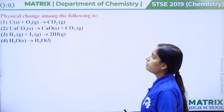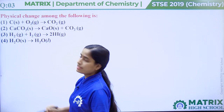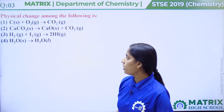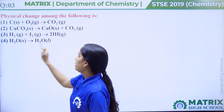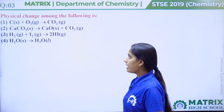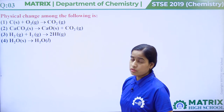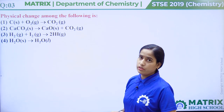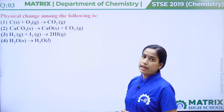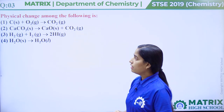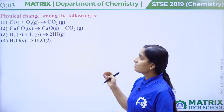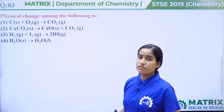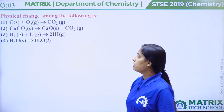Option 1: carbon reacts with oxygen gas to form carbon dioxide — new substance is formed, so it is a chemical change. Option 2: heating calcium carbonate produces calcium oxide and carbon dioxide — new substances formed, chemical change. Option 3: hydrogen reacts with iodine to form hydrogen iodide — new product formed, chemical change. But option 4: H2O solid changes into H2O liquid — only physical state changes from solid to liquid. This is a physical property change, so the correct option is option number 4.